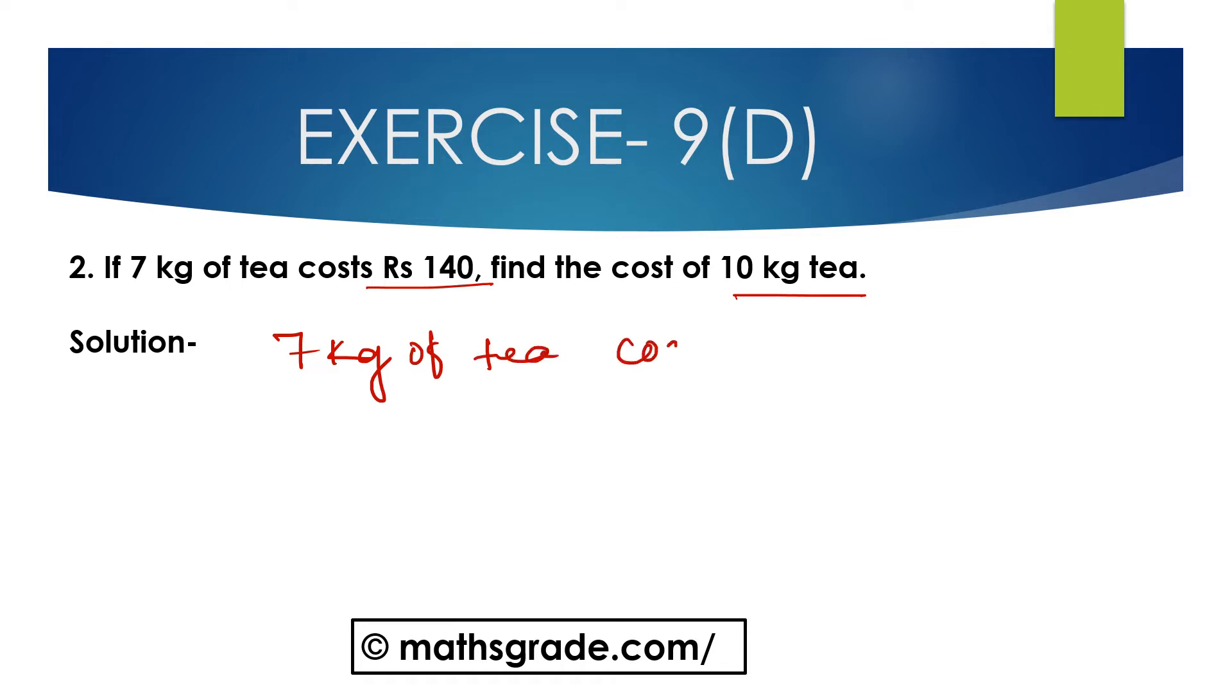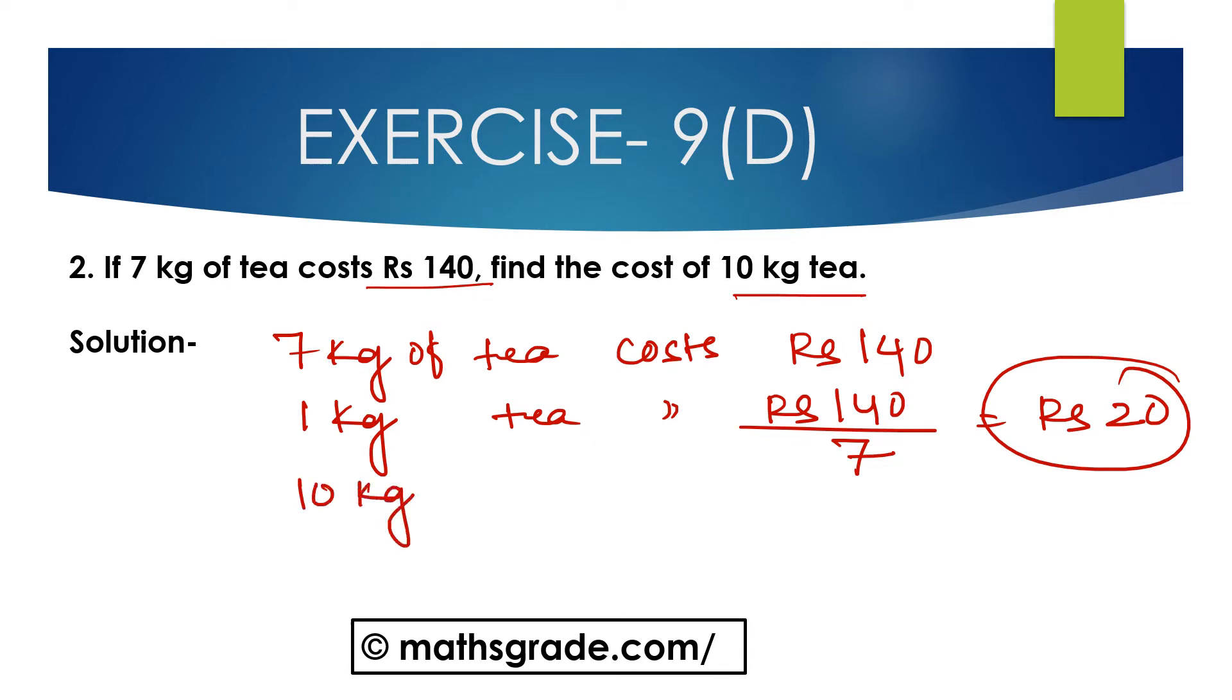7 kg of tea costs 140 rupees. 1 kg of tea costs 140 rupees divided by 7, which is equal to 20 rupees. Now, cost of 10 kg of tea is 20 rupees multiplied by 10, which is equal to 200 rupees. So, the cost of 10 kg tea is 200 rupees.